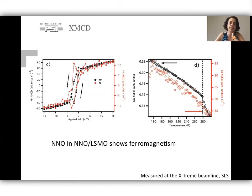We also measure the hysteresis curves element-specific using the XMCD. And we see manganese and nickel have the same shape of hysteresis. And as a function of temperature here, the XMCD signal also goes to zero more or less at the same temperature for manganese and nickel, showing that the ferromagnetism in NNO is induced by LSMO. So here we have seen that NNO, when it's in contact with LSMO, it shows ferromagnetism, which is not the case in the single layer as expected.